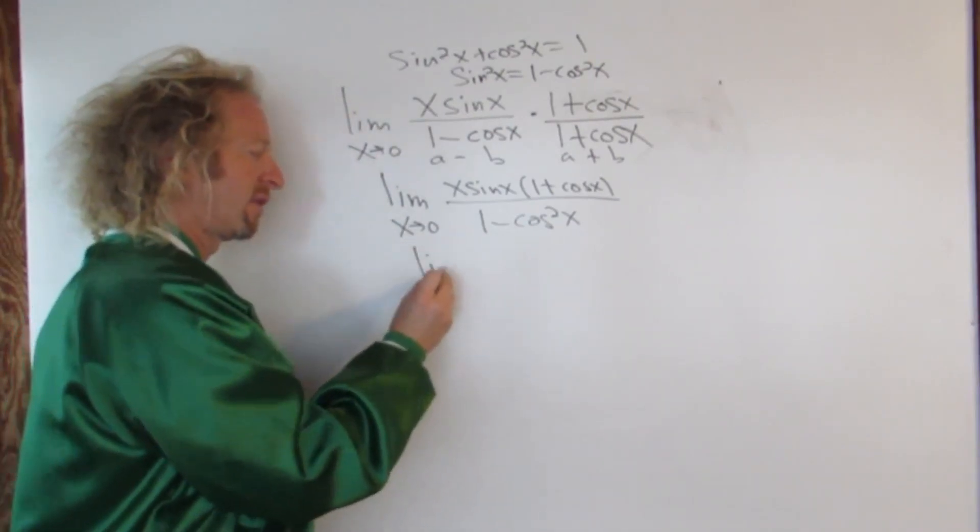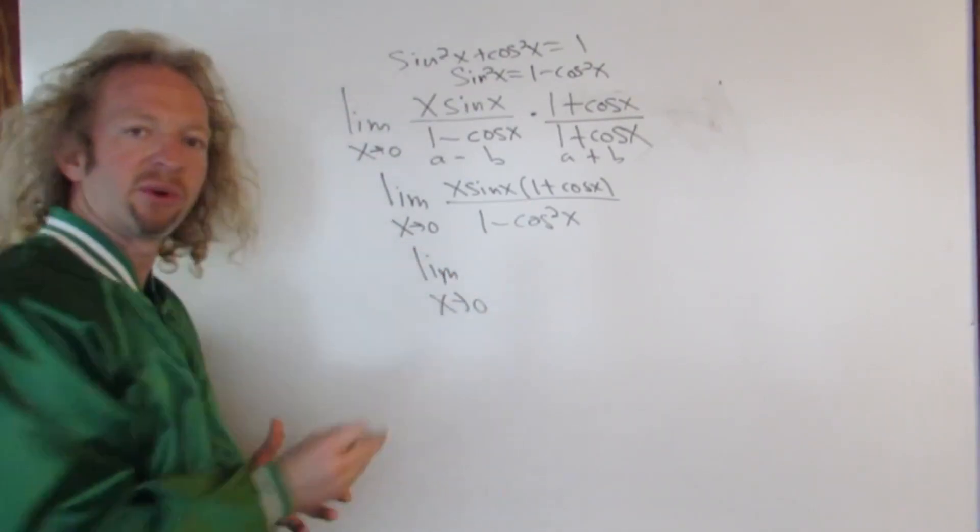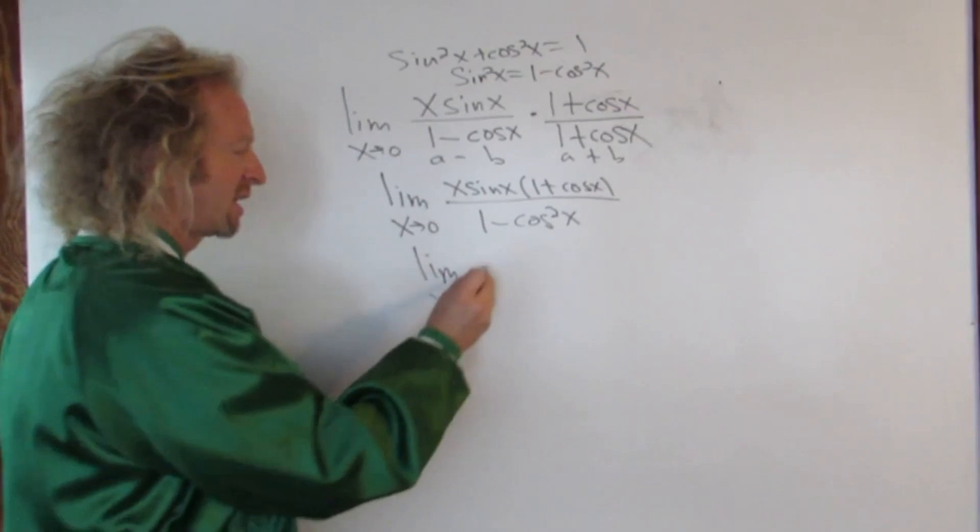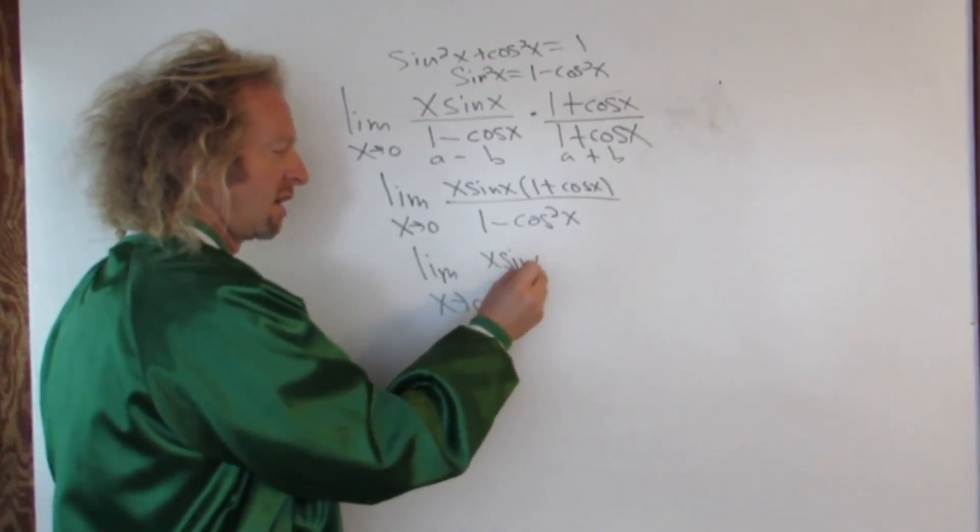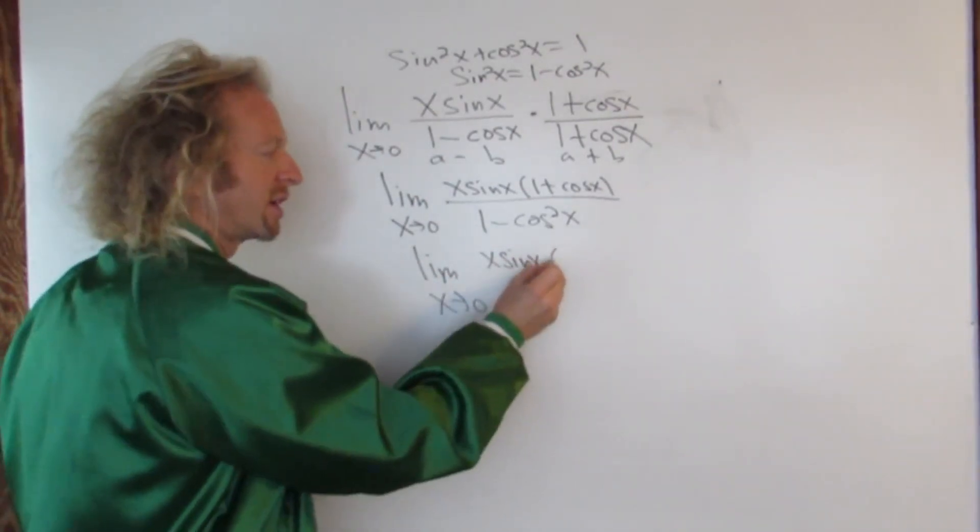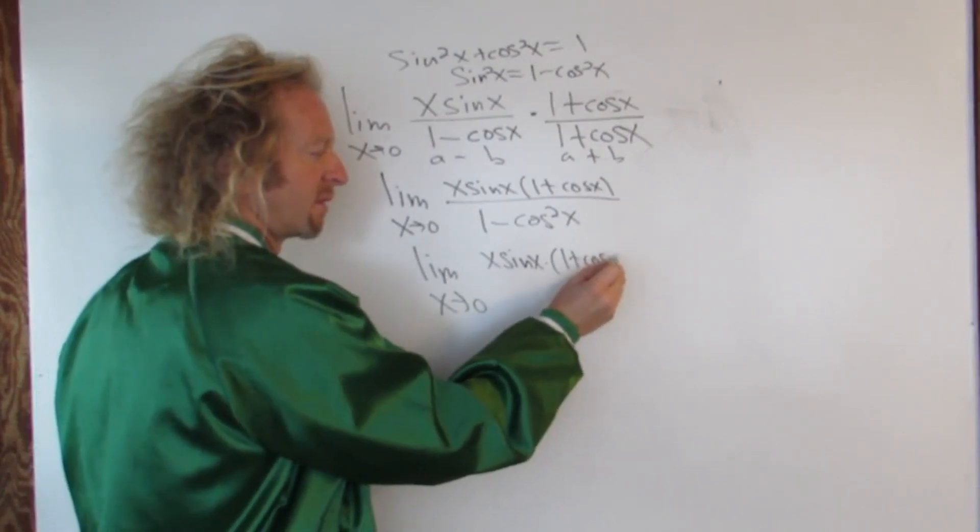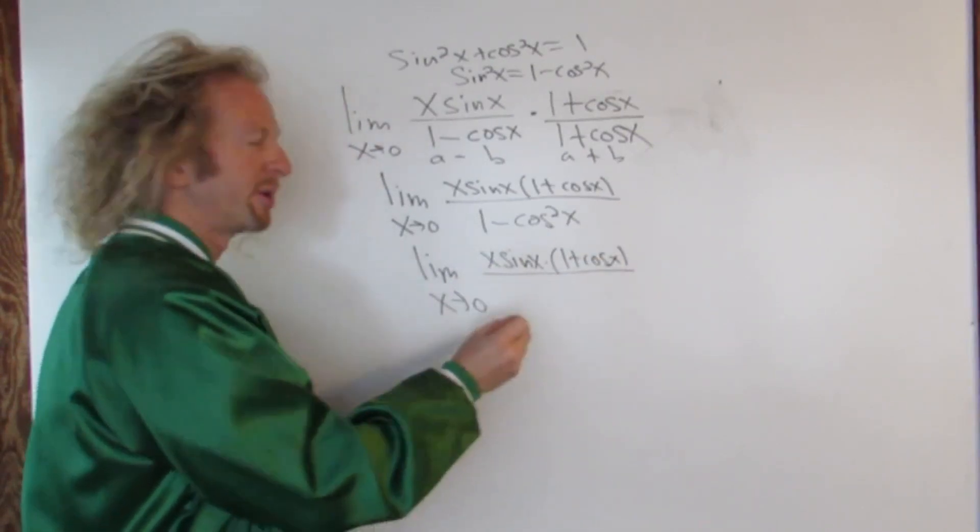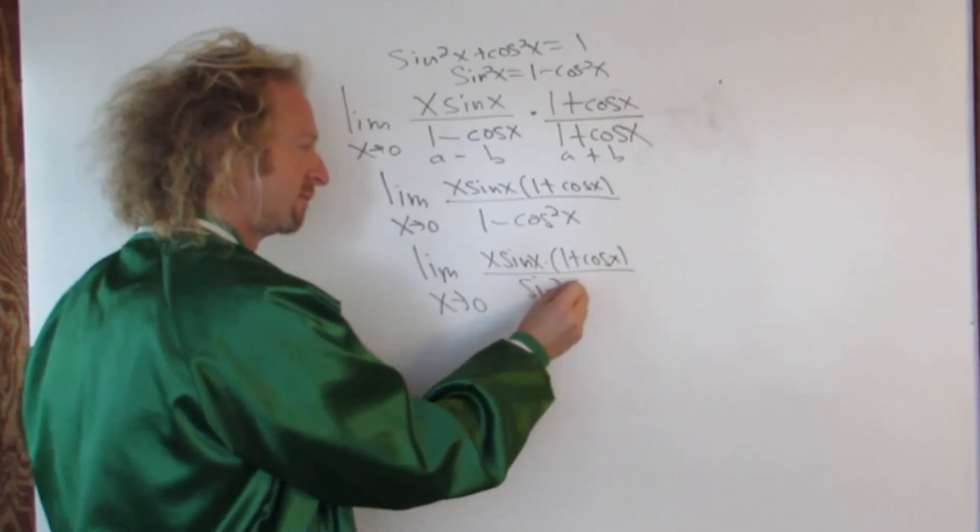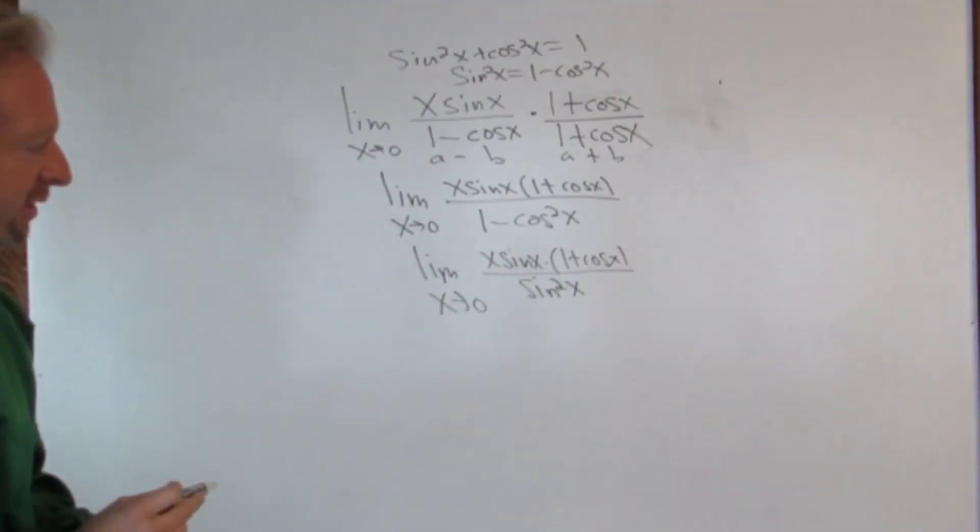You can write the bottom piece as sine squared. So this is equal to the limit as x approaches zero. We have x sine x, up top we still have that 1 plus cosine x, and on the bottom now we have sine squared. Good stuff.